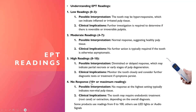If there is no response — a reading of 10 plus or maximum — this typically indicates non-vital pulp tissue, and the tooth may require endodontic treatment or extraction depending on the overall diagnosis. Some products use a 0–100 scale rather than 0–10, so you apply the same increments: 0–30, 40–70, 80–100, and beyond 100.